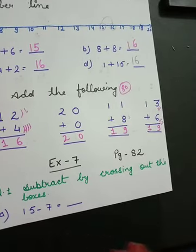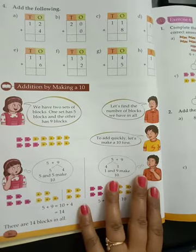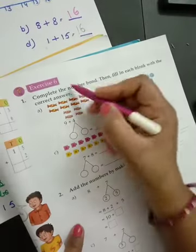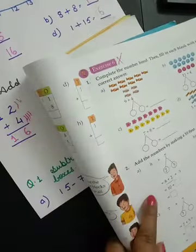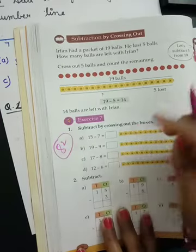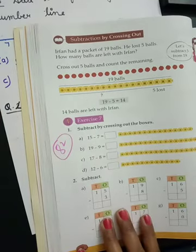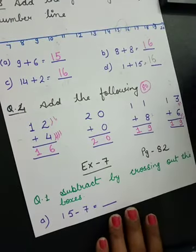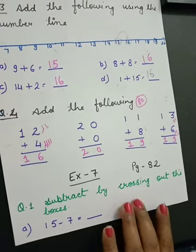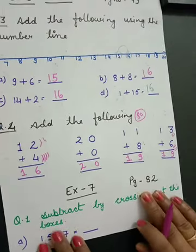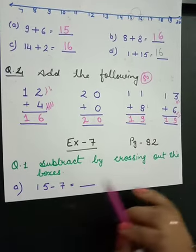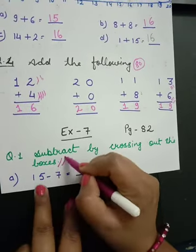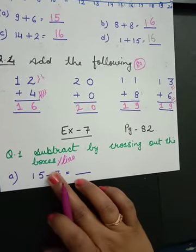Now look — Exercise 7. Listen all of you: Exercise 6, cut it, you don't have to do that. So all of you open page number 82, Exercise 7. Page number 82, Exercise 7. Question number one: subtract by crossing out the box or line. You can draw a box or draw a line.